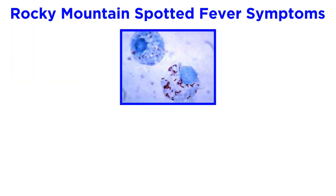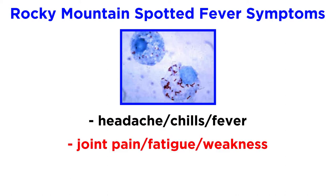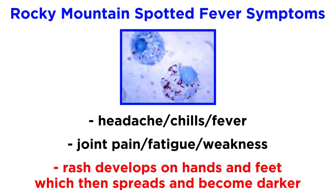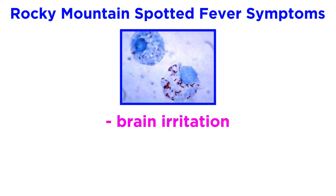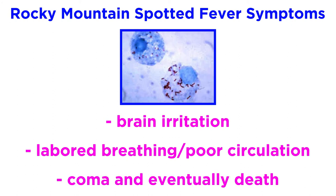Most people infected with Rocky Mountain spotted fever experience a headache, chills, and fever, followed by joint pain, fatigue, and a feeling of weakness. Sometime during the first week, a rash develops, beginning on the hands and feet, which can spread and become darker over time. In severe cases, patients might have brain irritation, labored breathing or poor circulation, and some become comatose and die.